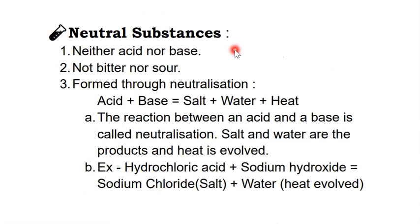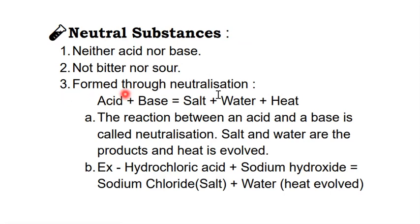Substances are of three types: acid, base, or neutral. Neutral substances are neither acids nor bases — they are not bitter, nor sour. They don't taste acidic or basic; they might taste salty, sweet, or be tasteless. Neutral substances are formed through neutralization.